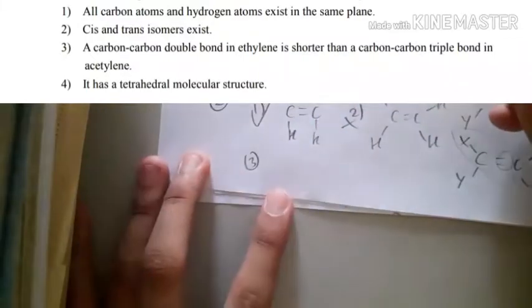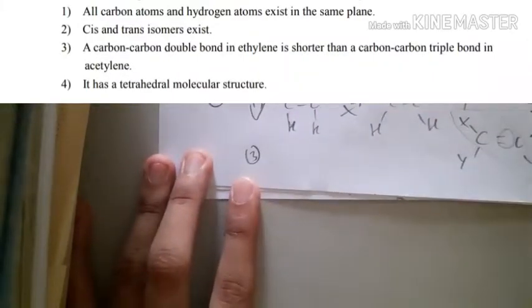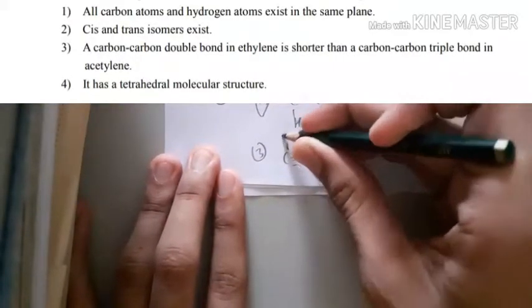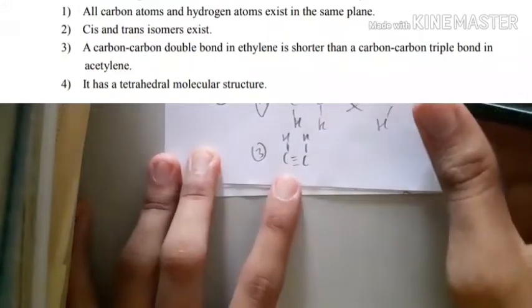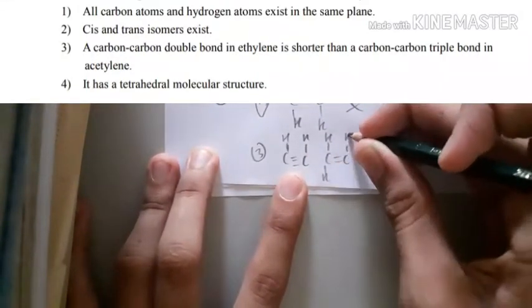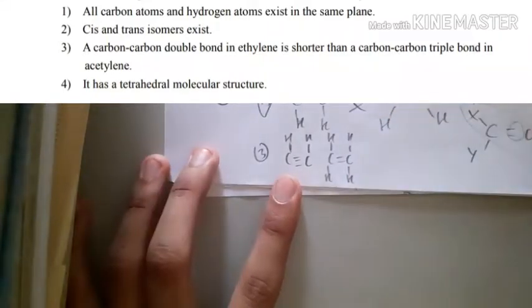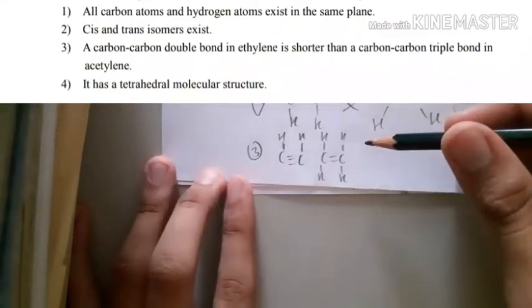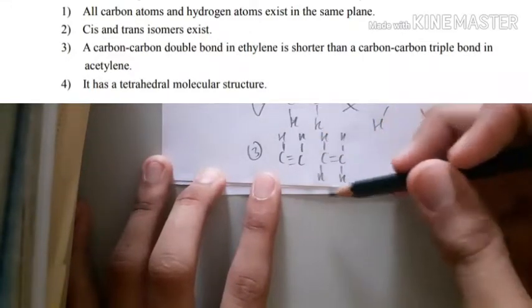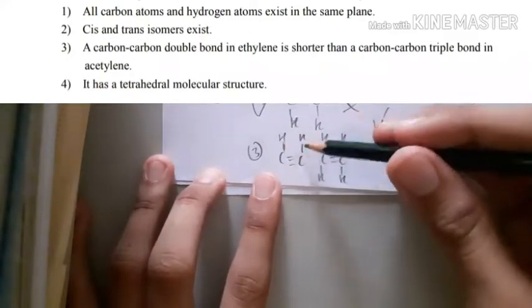For number three, carbon-carbon double bond in ethylene is shorter than carbon-carbon triple bond in acetylene. Acetylene is C triple bonded to C with H, and ethylene is C double bonded to C with H. The ethylene is actually longer than acetylene.